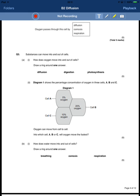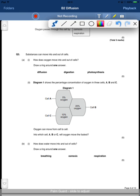Diagram 1 shows the percentage concentration of oxygen in three cells A, B, and C. Cell A has 5% oxygen, cell C 10% oxygen, cell B 20% oxygen. Oxygen can move from cell to cell.